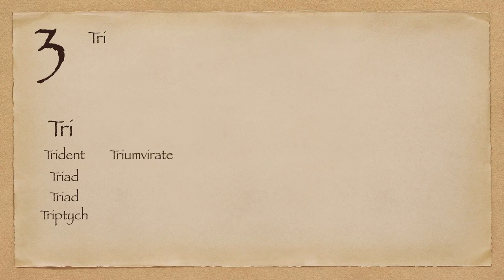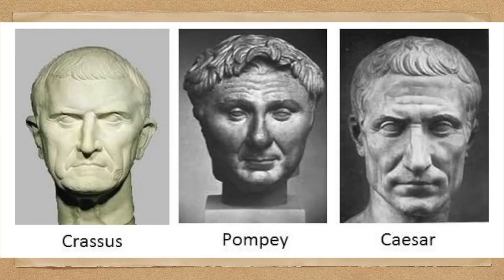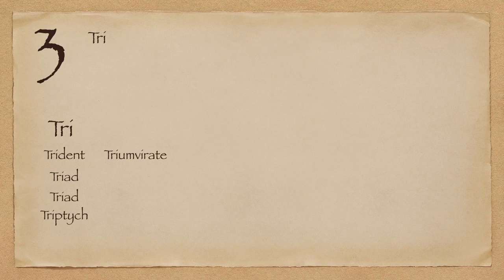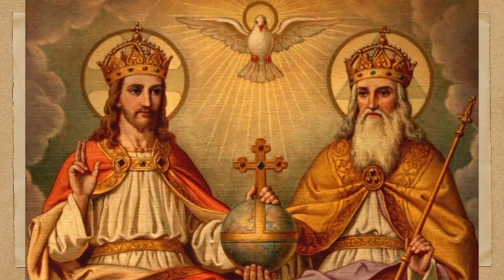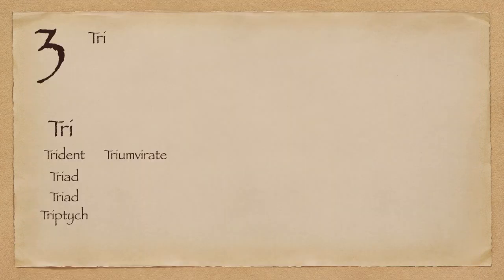Another very interesting word is triumvirate. Originally it refers to a group of three men holding power — specifically Julius Caesar, Pompey, and Crassus in 60 BC. These are famous characters from the Roman Empire, and this was the first coalition of these three people, called the triumvirate. Nowadays, any group of three powerful or notable people is known as a triumvirate — for example, the triumvirate of Tendulkar, Ganguli, and Dravid, or Brahma, Vishnu, and Mahesh. Who were involved in the second triumvirate? That's a question for you to figure out.